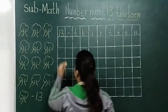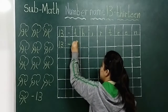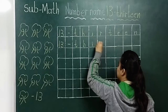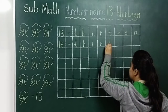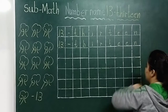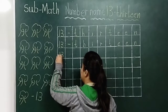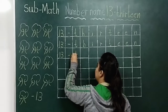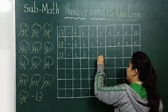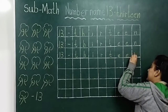So now look here. We have to write number 13, dash — T, H, I, R, T, double E, N — thirteen. Okay, now again, look here. One, three, 13, dash — T, H, I, R, T, double E, N — thirteen.